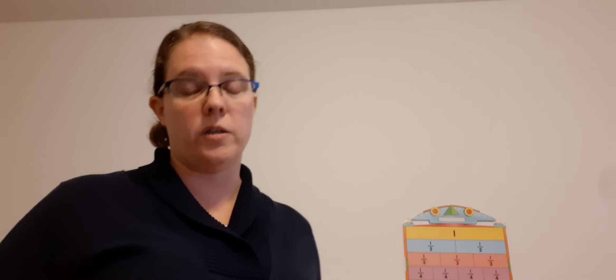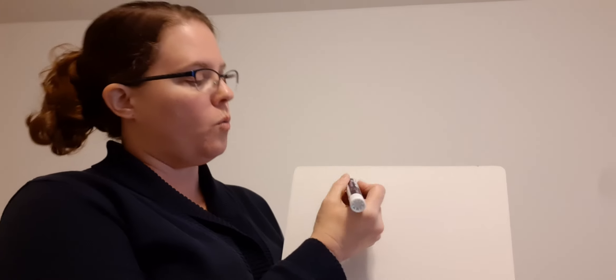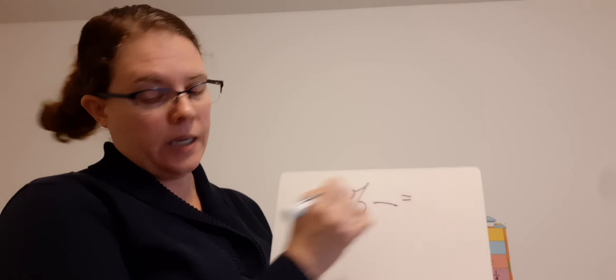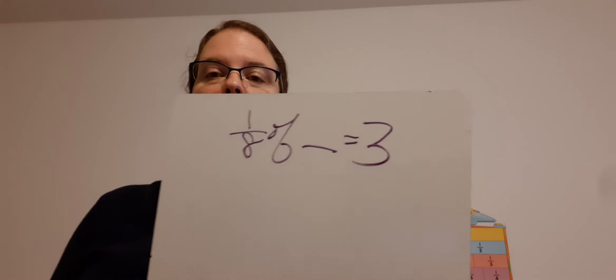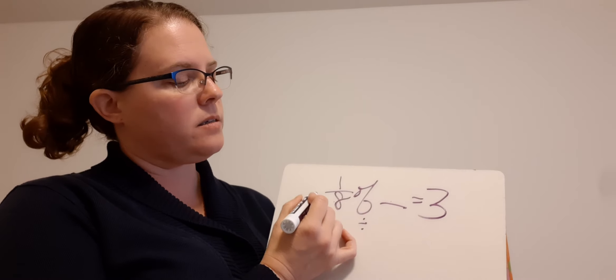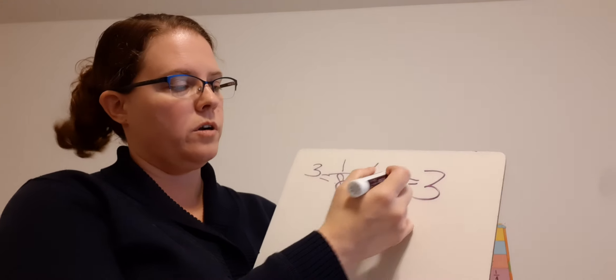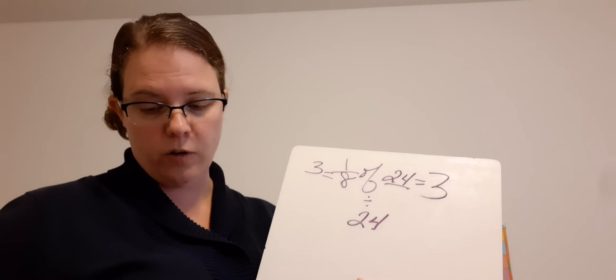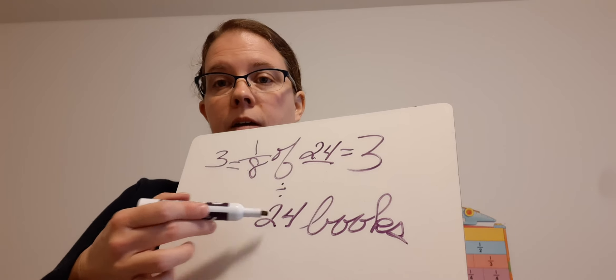Number two: one eighth of Tony's books are mystery books. He has three mystery books. How many books does Tony have in all? So I know he has three mystery books and that means that's one eighth of all of his books. So one eighth of something equals three. So what divided by eight equals three? Or think three times eight equals 24. So your answer is 24. How many books does he have? Books. So 24 books is your answer. Make sure you're showing me this part and also writing this part.